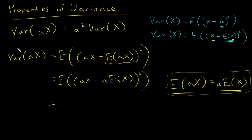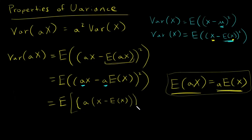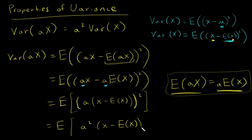From here I'm going to notice that I have a like term — I have 'a' in both spots, so I'm going to pull that out. And I have the expected value of a times x minus the expected value of x. I have to be really careful here with my parentheses — this parenthesis closes this one, and it's squared. So then I can square each piece of this product, and I get the expected value of a squared times x minus the expected value of x, squared.